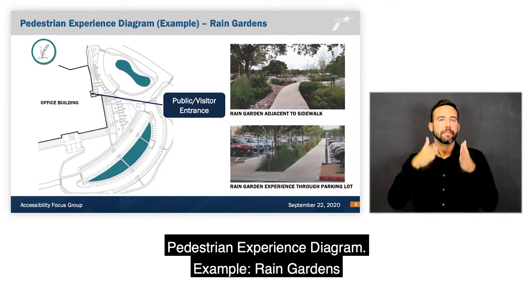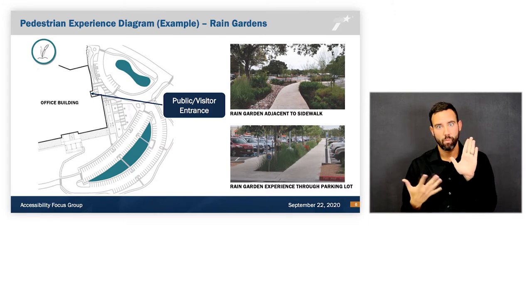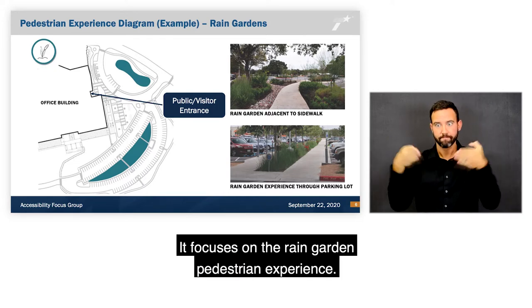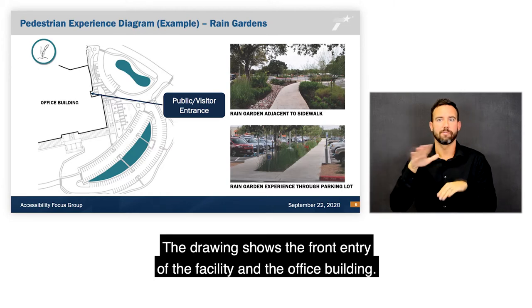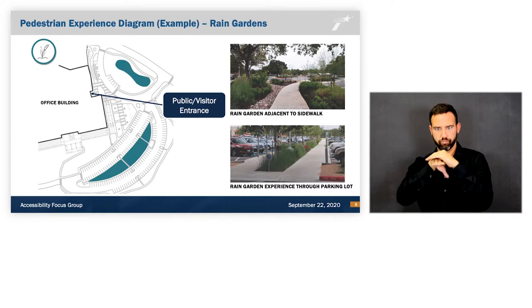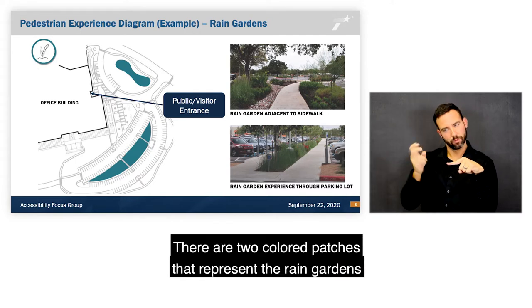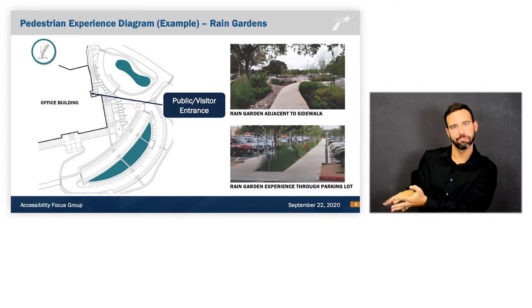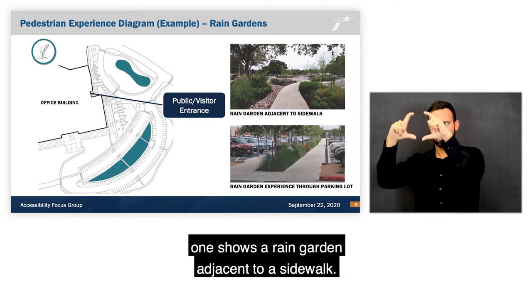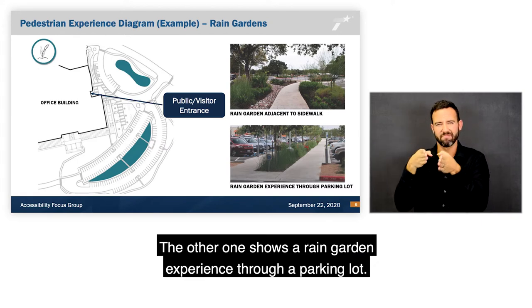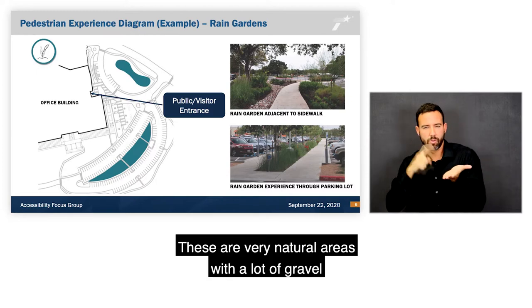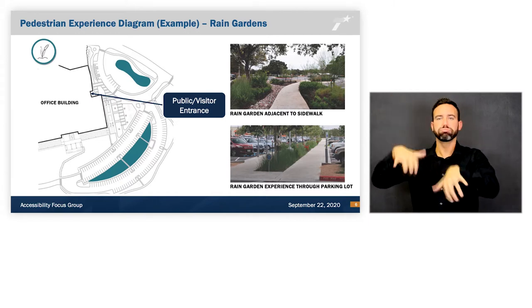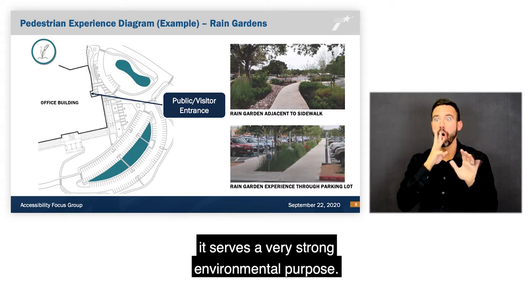The Pedestrian Experience Diagram for rain gardens provides more detail on the rain garden experience. The drawing shows the front entry and office building with two colored patches representing rain gardens serving as drainage structures. Two photographs to the right show a rain garden adjacent to a sidewalk and another through a parking lot — very natural areas with gravel that allows rain to accumulate without standing water. Although the rain garden is an amenity, it serves a strong environmental purpose.